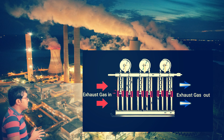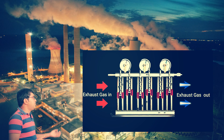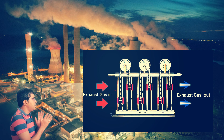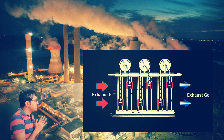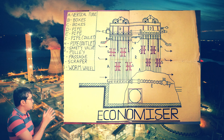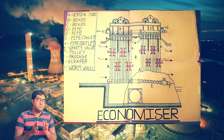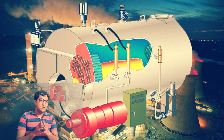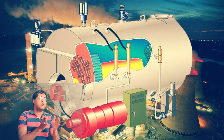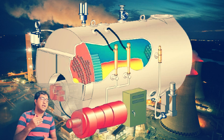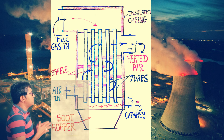In the economizer, water flows inside the tubes and the flue gases pass outside the bundle of tubes. This bundle of tubes exchanges heat between the water and the flue gases. Due to this heat transfer, the temperature of the water increases, and this hot water is supplied to the boiler. This component improves the performance of the boiler because preheating the water means less heat energy is required to generate steam.